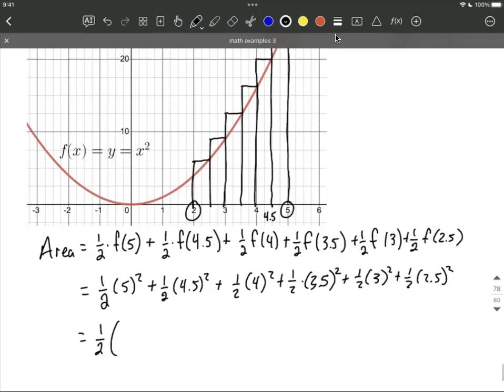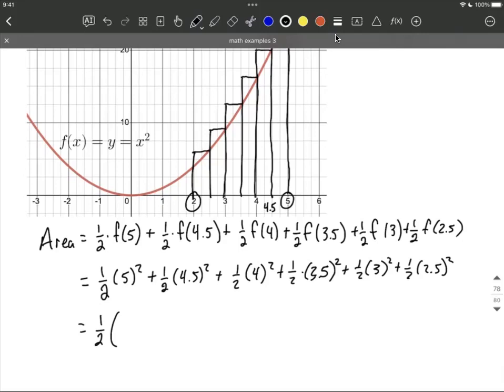Now you may say to yourself, okay, well I can do five squared is 25. Some of these others are going to be a little bit more difficult. We'll get the calculator out to maybe help us out. Four and a half squared is 20.25. Four squared is 16. Three and a half squared is 12.25. Three squared is nine, and two and a half squared is 6.25.